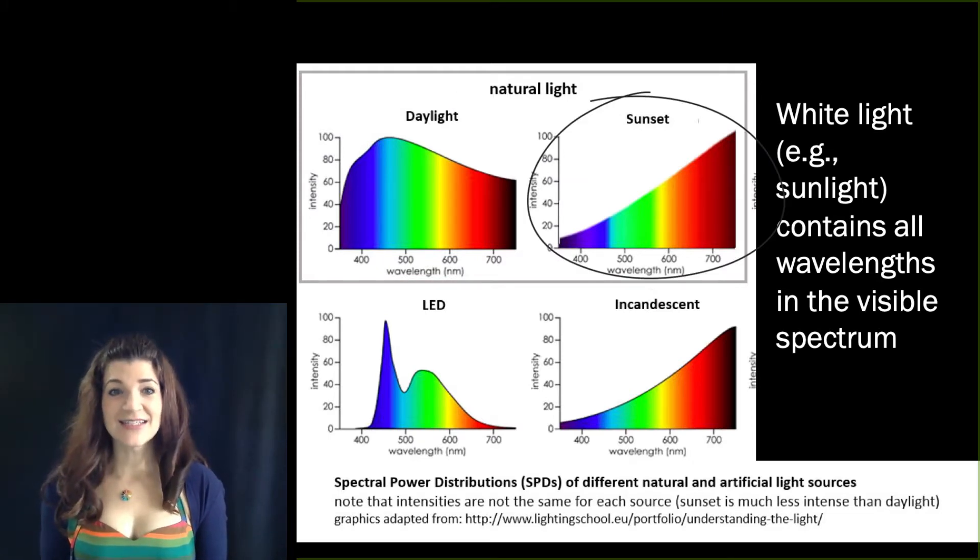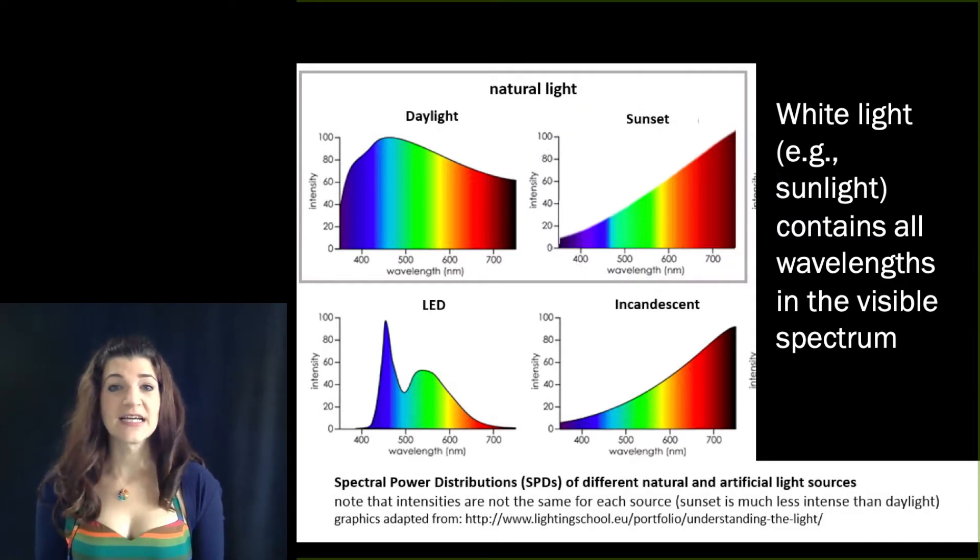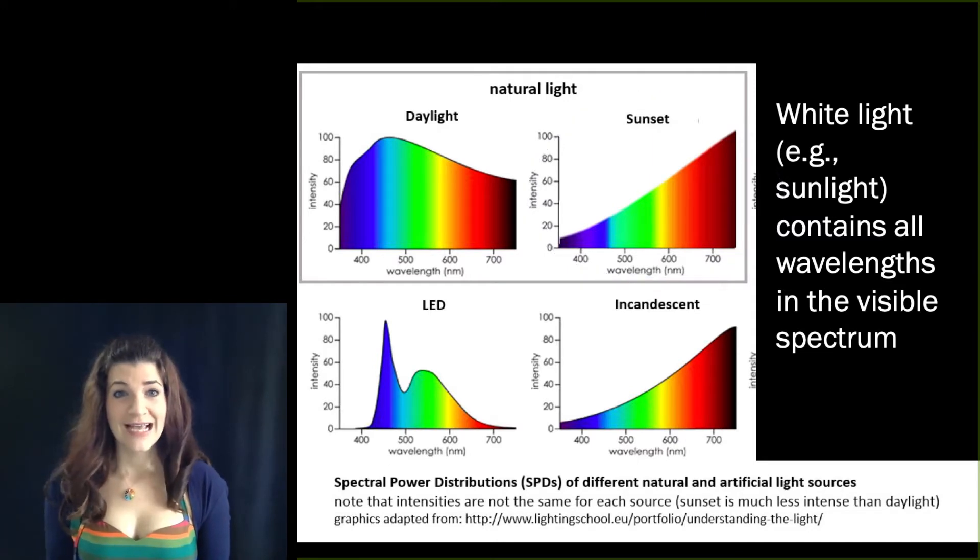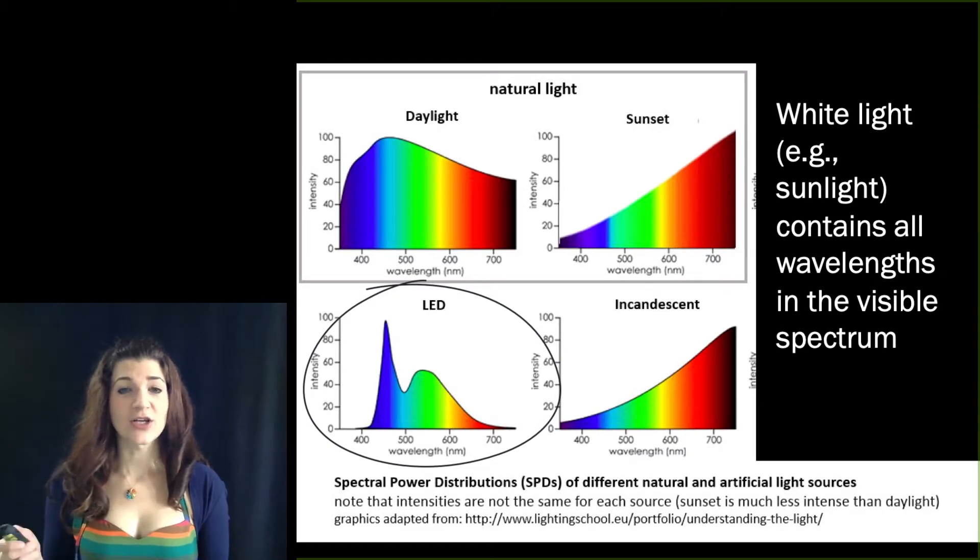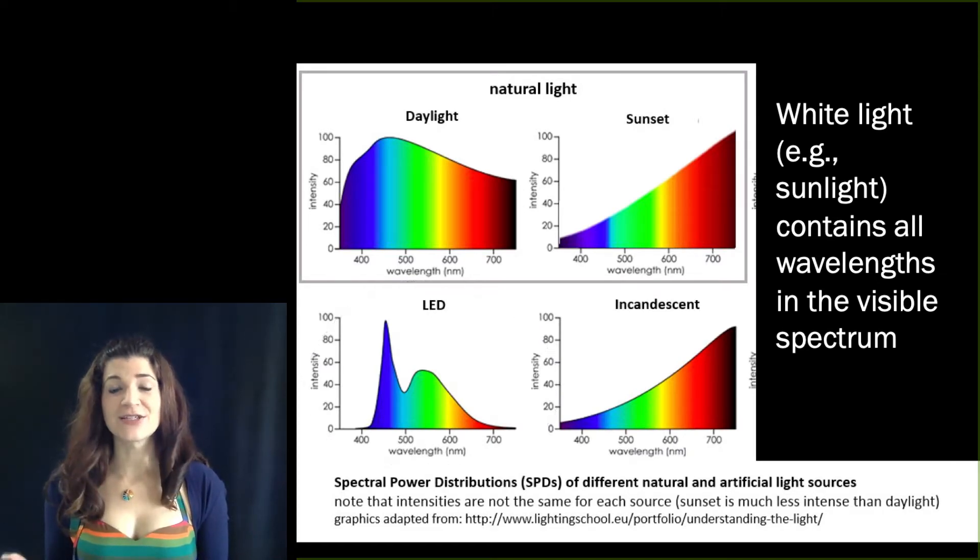At sunset, the intensities are higher at longer wavelengths, leading to a redder perception. LED lights tend to have more energy at shorter wavelengths, so they tend to look bluer.